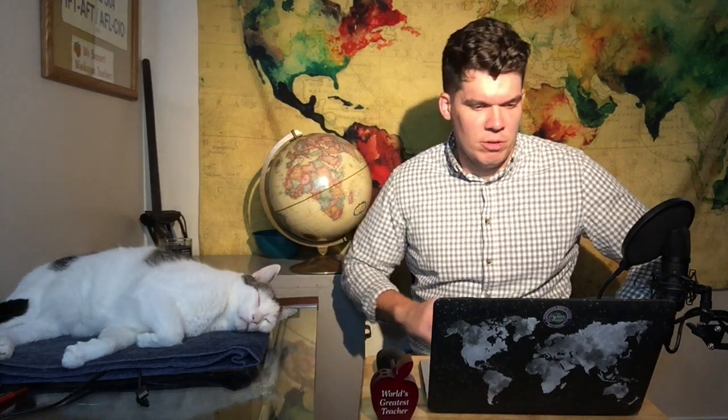Unfortunately for Ferdinand Magellan, he did not make it all the way — he got embroiled in a conflict in the Philippines, got shot by a bow and arrow, and died. In this map, we see the various voyages of Columbus, which were predominantly in the Caribbean area, along what we now know as Central America and the northern coast of South America — that's where Spain pretty much did their thing. We'll see later that English and Dutch explorers made their way to more northern areas of the Americas, and French explorers further north than that.